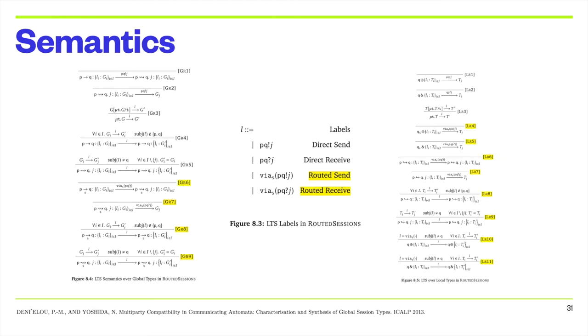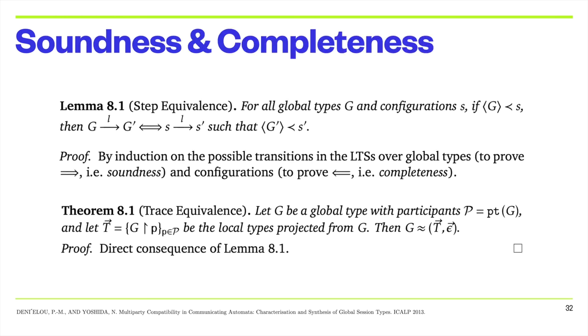We extend the labeled transition system semantics for session types to support the new syntax, making sure that we do not over-serialize the communication. We achieve this by allowing reduction steps involving rooted communication to be performed first, provided that it does not violate the original ordering of messages. To justify the correctness of our extensions, we prove the soundness and completeness of our extended semantics on global and local types with respect to projection.